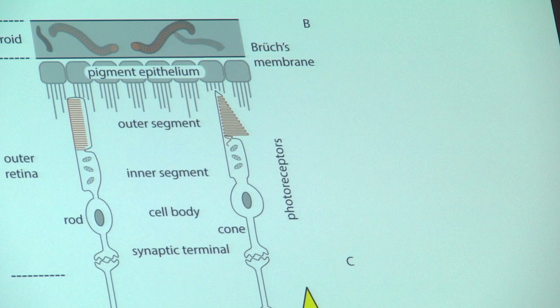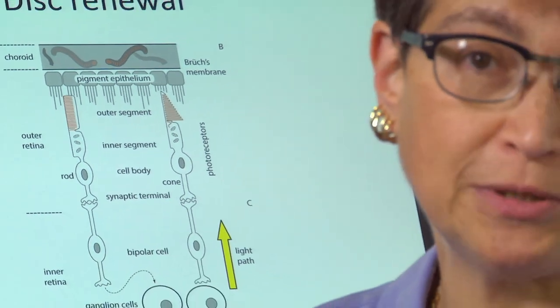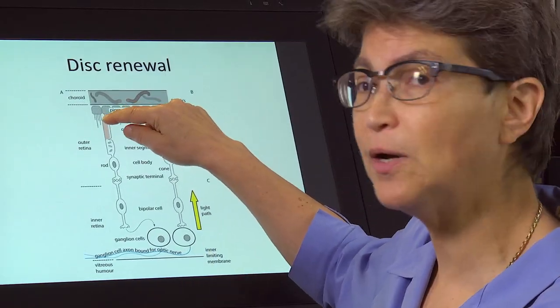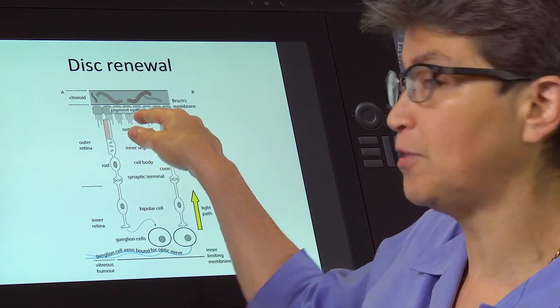So these ones out at the tip are the oldest. They have accumulated damage, and in point of fact, they accumulate for about 10 days. And then the tip of the photoreceptor is phagocytosed by the pigment epithelium.